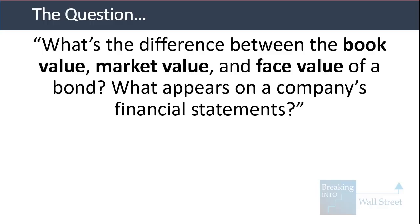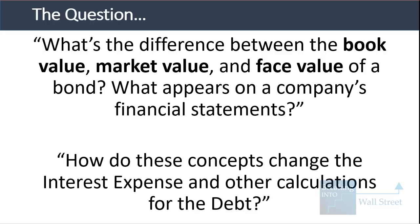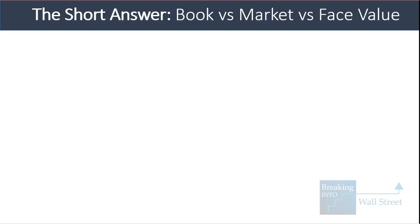The typical question we get goes something like this: what is the difference between the book value, market value, and face value of a bond? What appears on a company's financial statements, and how do these concepts change the interest expense and other calculations for the debt? I'll give you a short answer upfront, then look at examples of how to calculate these numbers and project them in Excel, and then one final example that combines everything.